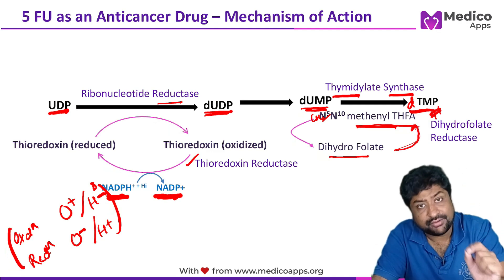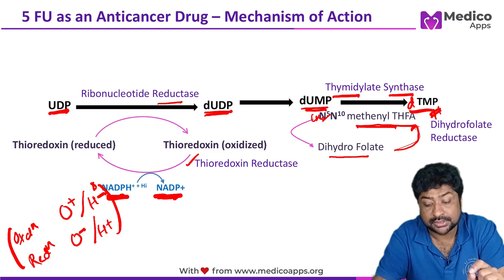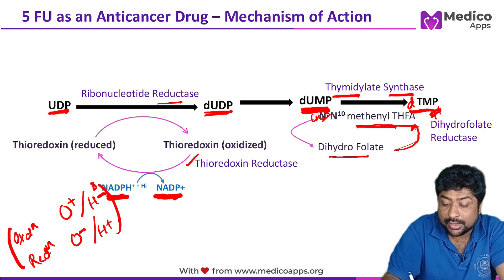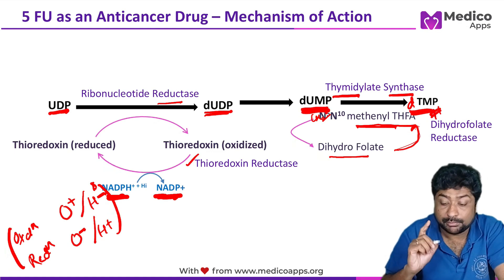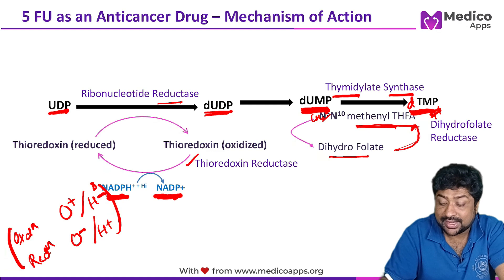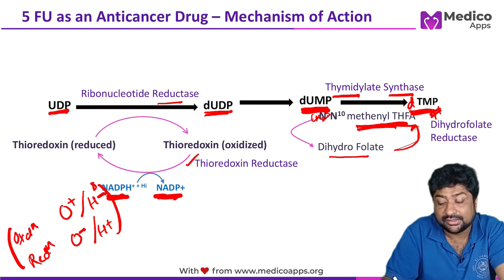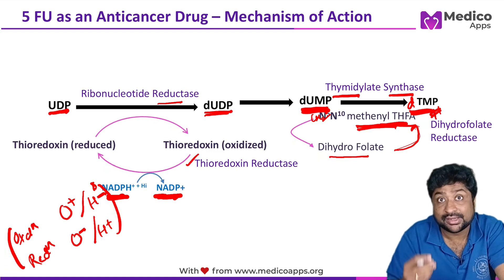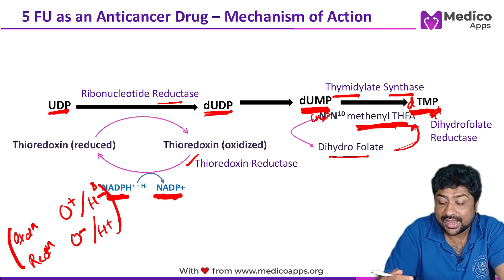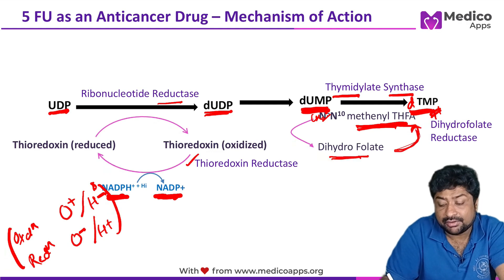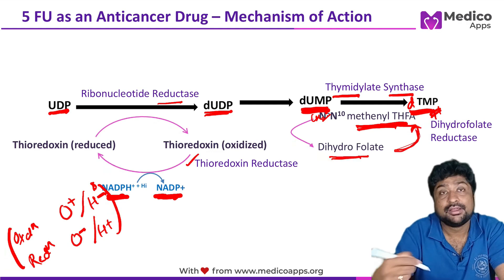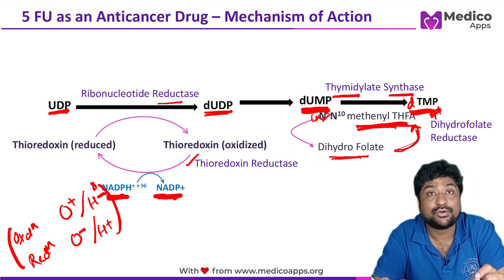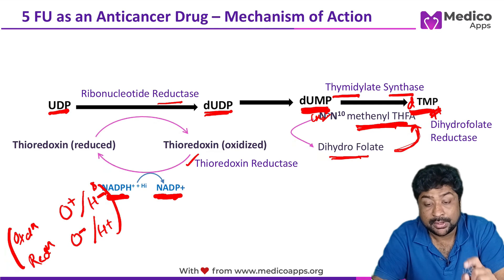This is a very important step. dUMP is converted into dTMP; methylene tetrahydrofolate donates the methylene and is converted into dihydrofolate, which is then recycled back into methylene tetrahydrofolate with the help of dihydrofolate reductase.